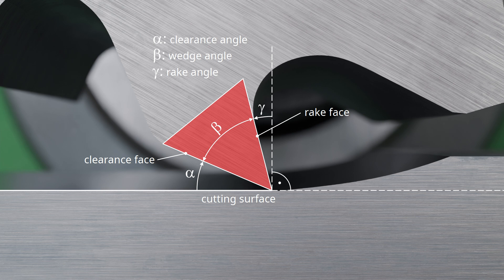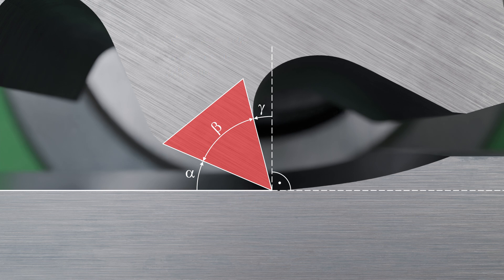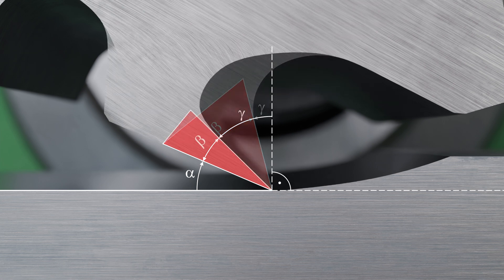The rake angle has a significant influence on chip formation. With a large rake angle, the wedge angle is necessarily small, since the clearance angle typically lies between 6 and 12 degrees and is therefore predetermined. Large rake angles result in high separating forces and overall favorable cutting conditions.